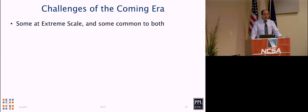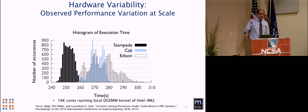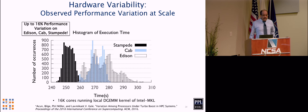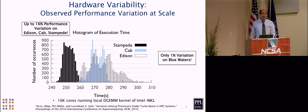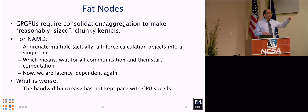The second point is some challenges of the coming era, at extreme scale and beyond. One recent thesis from my group — the author is now at IBM Research — did work on measuring variability and how to deal with it. On machines like Edison, CAB, and Stampede, we observed significant variability core-to-core just running a DGEMM, with maybe 20% variation in speed. That's going to get worse. The trend is towards more variability and towards fat nodes — nodes with a lot of compute capability, including GPGPUs — which will complicate things, particularly around latency tolerance.